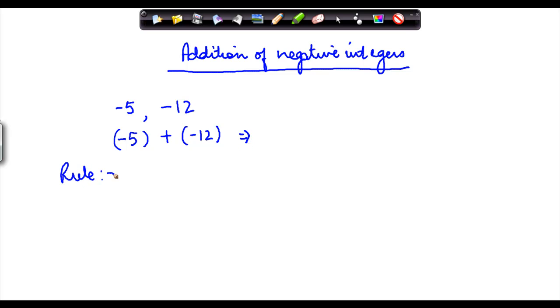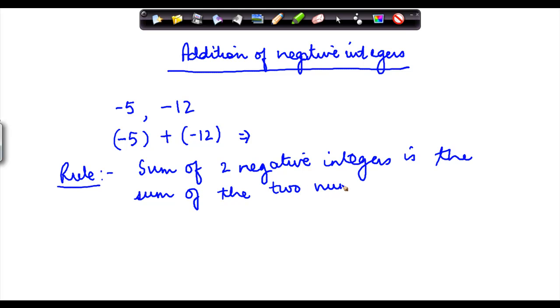The rule is that the sum of two negative integers is the sum of the two numbers. To such sum, you put a negative sign.